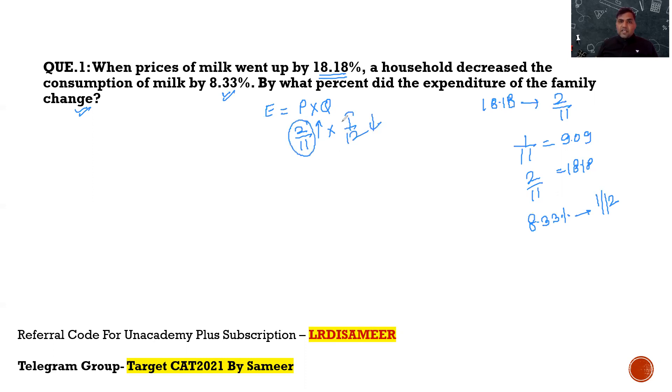Now, this gets increased by 2 by 11, and this is getting decreased by 1 by 12. That means the new prices are 13 by 11 of the previous price, and the new quantity is 11 by 12 of the previous quantity. It's getting decreased by 1 by 12. So, it will be 11 by 12. So, 11 and 11 will get cancelled. So, the new expenditure will be 13 by 12 of the previous expenditure. This tells me that the expenditure of the family will get increased by 8.33 percent. And that's the answer of the question.